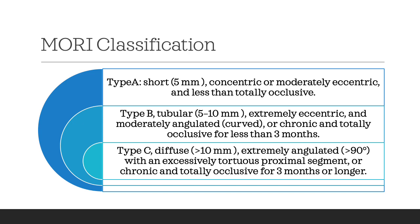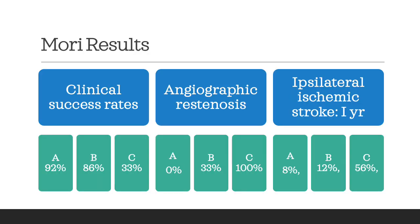One must understand the Mori classification, which describes how difficult a lesion is to stent. Type A (ideal): short lesion less than 5 mm, concentric, conducive vessel anatomy. Type B: tubular 5–10 mm length, extremely eccentric, moderately angulated, or chronically occlusive less than 3 months. Type C (worst): stenosis over 10 mm, vessel angulation over 90 degrees, excessive tortuous proximal segment, or chronic occlusion over 3 months. Clinical success in Mori A is 92%, B is 86%, and C is 33%.